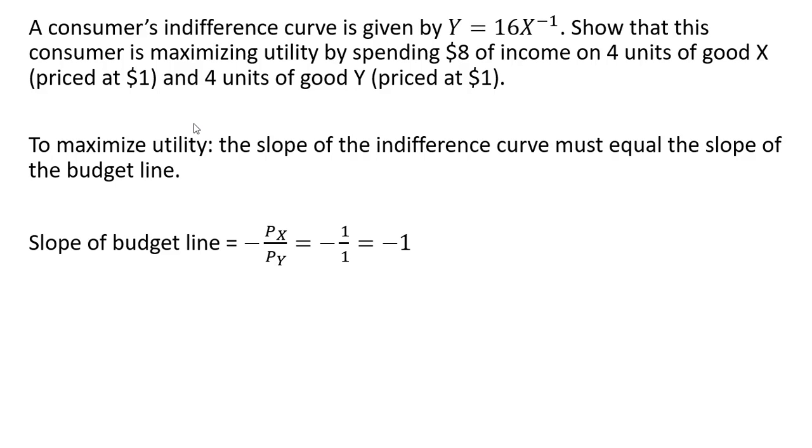The price of good X, the thing we're measuring on the X axis, divided by the price of good Y, the thing we're measuring on the Y axis. In this case, the price of each good is 1, so the slope of the budget line equals minus 1.